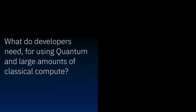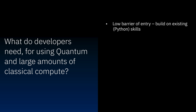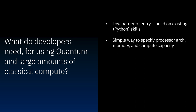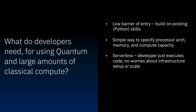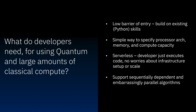What attributes do developers need to use quantum and classical compute in combination? We want developers to reuse their existing skills — in programming languages, focusing on the Python ecosystem — as well as tools for debugging, development, monitoring, and operational management. We want to make it as simple as possible to specify the processor architecture, memory, compute capacity, and region. We want them to do it in a serverless fashion, focusing only on their code and never worrying about underlying infrastructure — and to do this for both sequentially dependent and embarrassingly parallel algorithms.